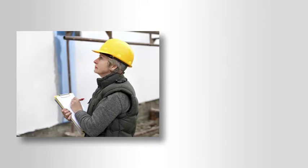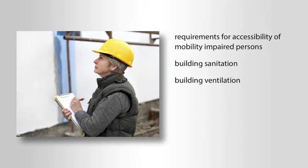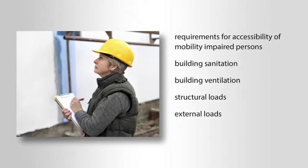The reason is the IBC addresses not only fire and life safety aspects, but also includes requirements for accessibility of mobility-impaired persons, building sanitation such as potable and wastewater systems, building ventilation such as the fresh air supply and heating, ventilating, and air conditioning systems, as well as various structural loads of the building itself and external loads including snow, wind, rain, and seismic ground movements. A building's occupancy classification influences these and other building code provisions.